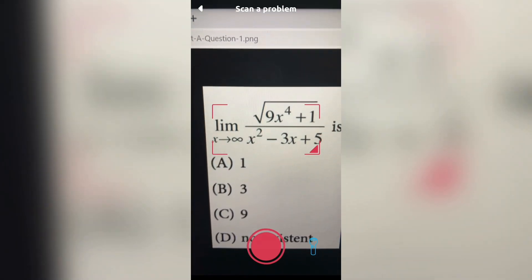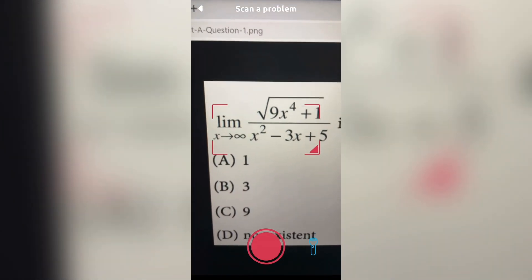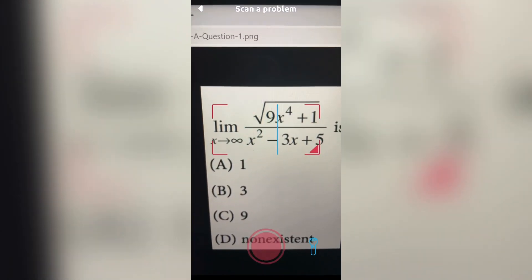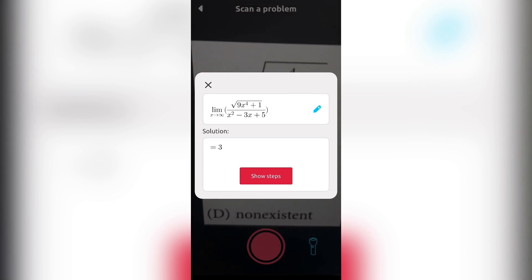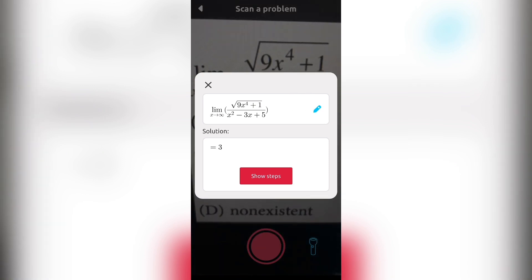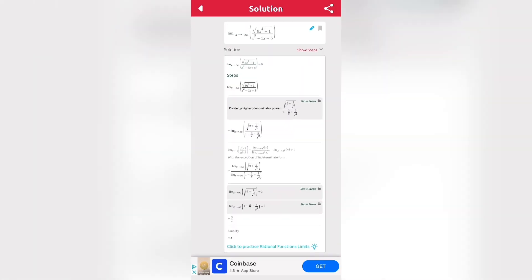Now once again, right over here, I have a calculus problem. And if I do want to find the answer to this problem, all I got to do is put the answer within the four corners and hit the red circle at the bottom. After that, it will scan the problem and it will show me that the solution to this problem is three. Once again, if I hit show steps, you can see that these are all the different steps that it takes to get to the problem.